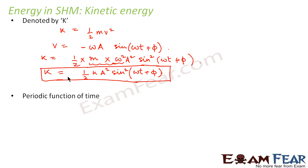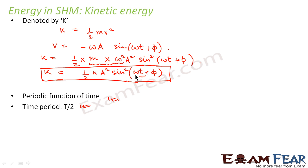This shows that kinetic energy is a periodic function of time — it also varies with time t. The time period for this function is T/2. I leave it to you to solve it yourself, as in previous slides the first two problems discussed were similar: given a function of the form sine squared(omega t + phi), you calculate the time period, which comes out to be T/2.